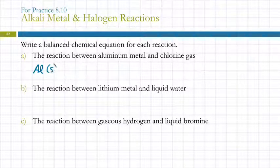So, aluminum, metal, and chlorine gas. What's the formula for chlorine gas? Cl2. It's a diatomic element.